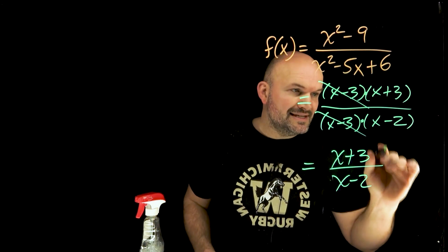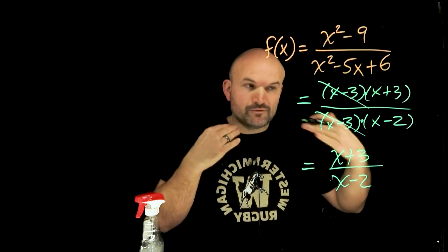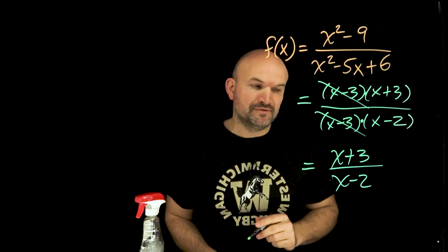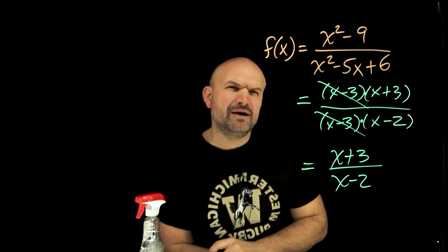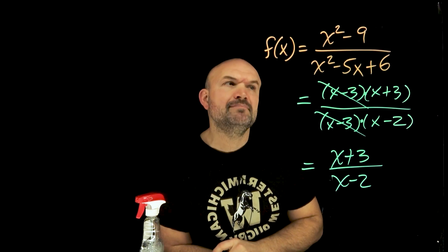The only thing left is the x minus two, which is non-removable. It did not get removed. So we have a removable discontinuity and a non-removable discontinuity. Now, why are we still calling them discontinuities? What did I mean by that?